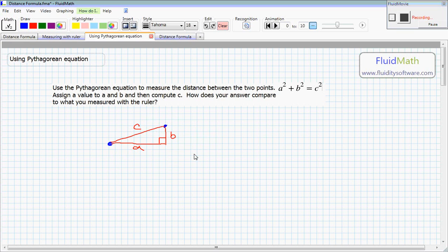But we're going to try using the Pythagorean equation, the Pythagorean theorem, to measure this distance between the two points. So we have a triangle drawn here, a right triangle, that includes the two points as part of its vertices. We have A, B, and C labeled for the sides. We're going to assign a value to A and B, and then compute C.